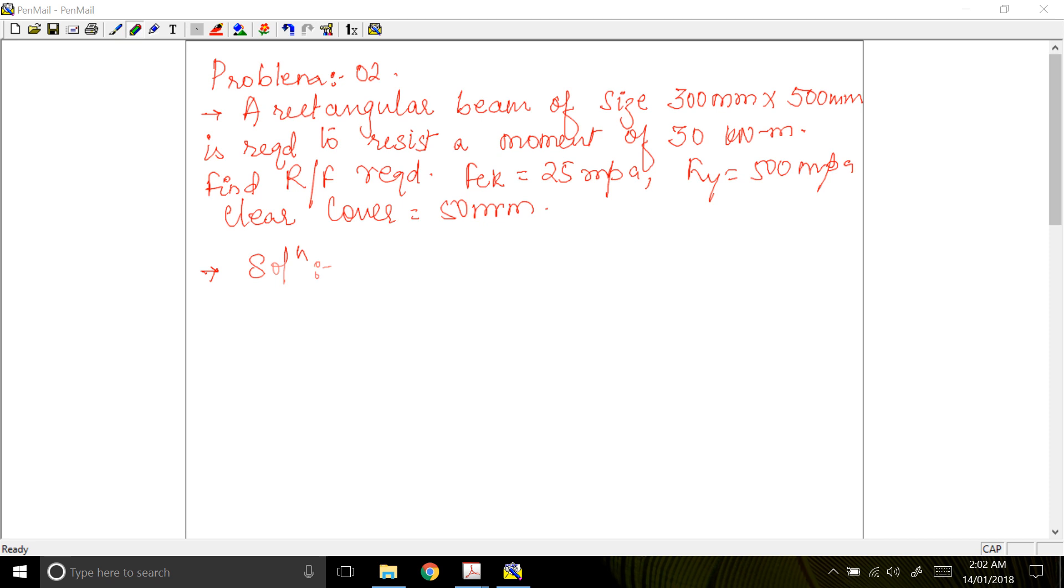If they have given you a clear cover, that means this depth is your D, not your small d. D is your overall depth. So the first step is we have to identify what we exactly need to find. To find is area of steel. We need to calculate the area of steel.